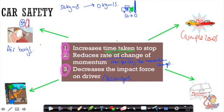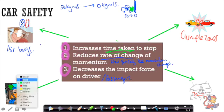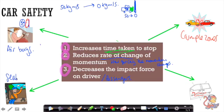Over here you've got seat belts and again they do the same thing. Having that seat belt, having that elastic object there, increases the time taken for you to stop and reduces your rate of change of momentum and decreases the force that is applied to you.